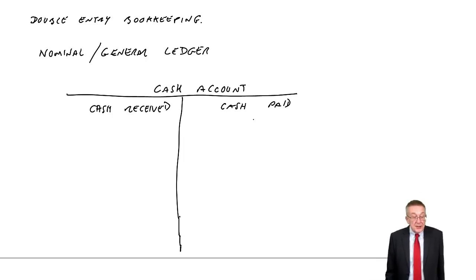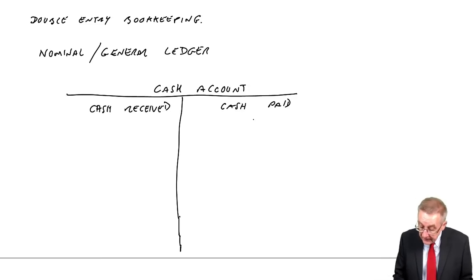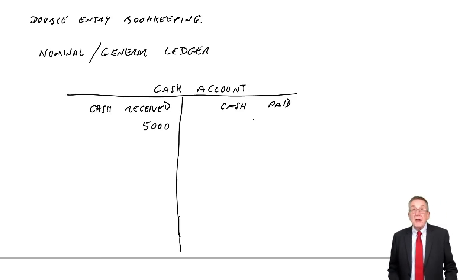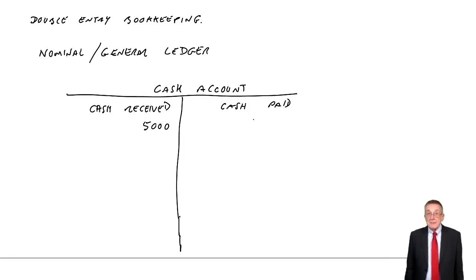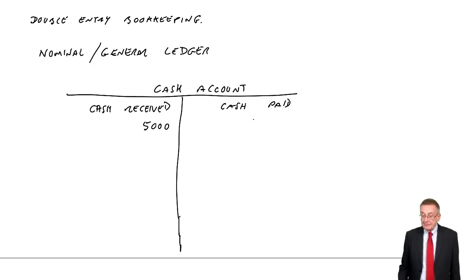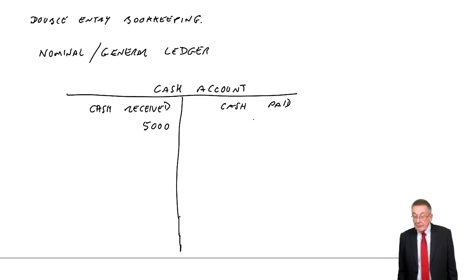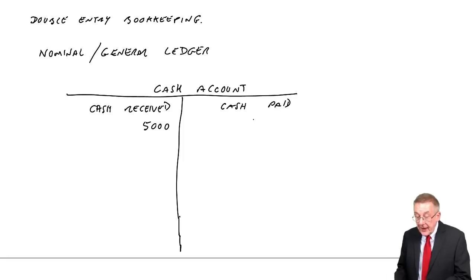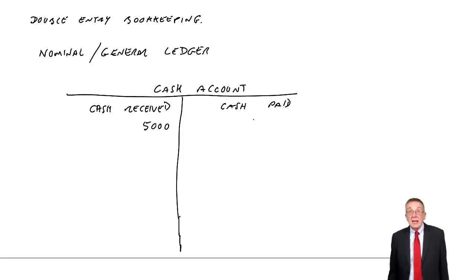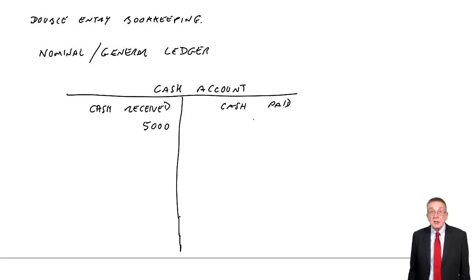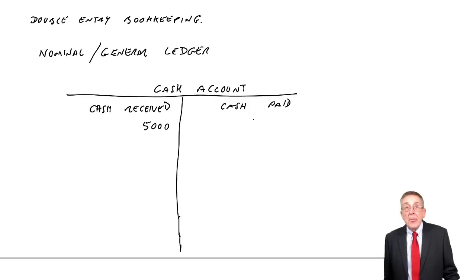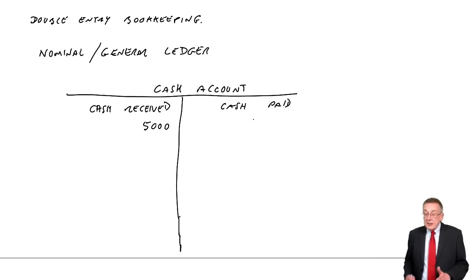We've received cash, so I'll put £5,000 on the left-hand page. In exams, we tend just to work in pounds — don't waste time putting .00 for the cents. So I've now got a record on that account that we've got 5,000 cash. But there is another effect: the other effect is that the business owes the owner 5,000.